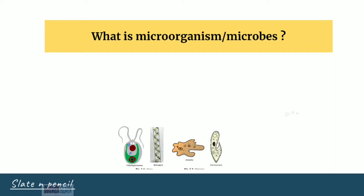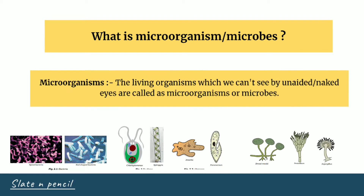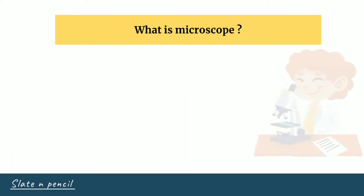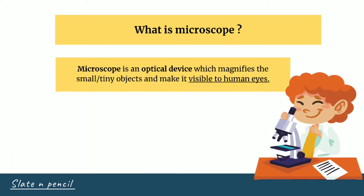What are microorganisms? Microorganisms are living organisms which we cannot see with the naked eye. We need to use a microscope in order to view them. A microscope is an optical device which magnifies tiny objects so that the human eye can see them.